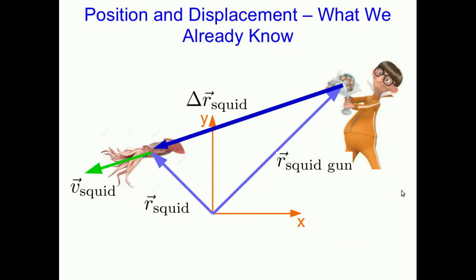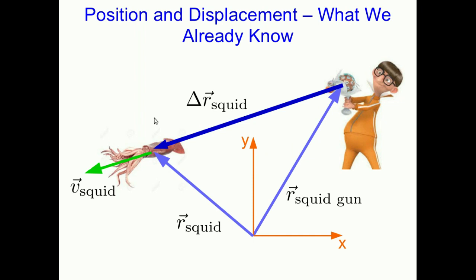I want to point out a few things about positions and displacements. First of all, positions we already know point from the origin to the location of the object, whereas a displacement always points from some initial location to some final location. The other thing is that we think displacements are going to be more useful to us because when we move our coordinate system all our position vectors change but our displacements don't.